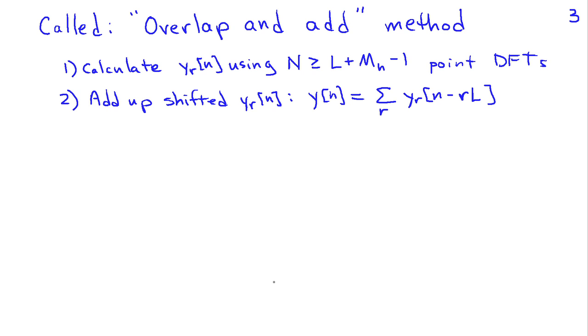This method, based on what you saw visually, is actually called the overlap-and-add method. The y's overlap and we add them up to get the final result. Our procedure for using the DFT is: first, calculate each of these y_r's using a DFT of sufficient length so that we get the linear convolution of x_r with h. That length has to be L + m_h - 1.